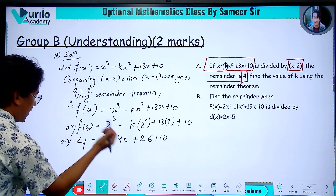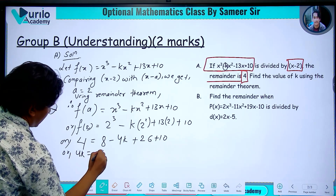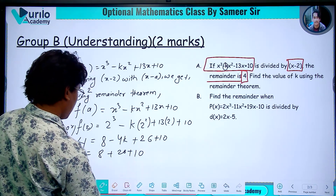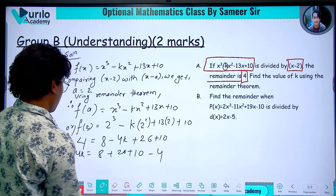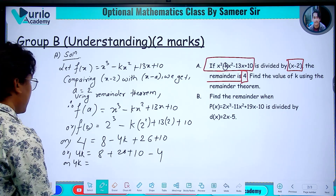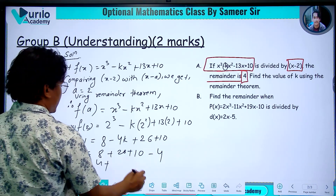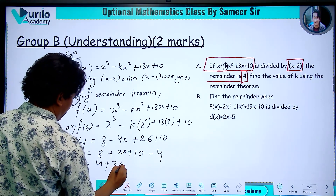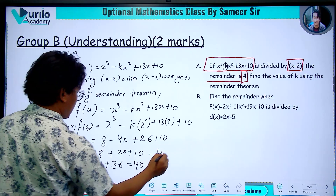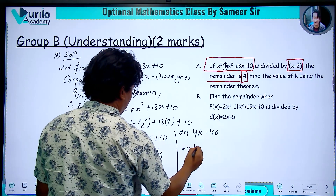Now we will solve the problem. 4k equals 8 minus 4k plus 26 plus 10 minus 36. So 4k equals 40, and therefore k equals 10.